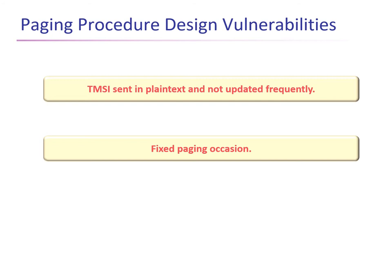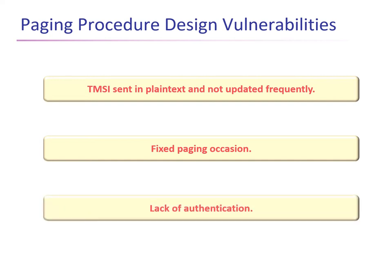The second problem is that the paging occasion is fixed. As discussed, the occasion when the device wakes up to check for pending services is based on the last eight bits of the IMZ, which is a permanent identifier not updated once assigned. The third problem is the lack of authentication. There is no provision for authentication of paging messages by the cellular devices. Any attacker can set up a fake base station and start injecting tsunami warnings or earthquake warnings, and the cellular device would have no way to verify whether this is coming from an authentic source.